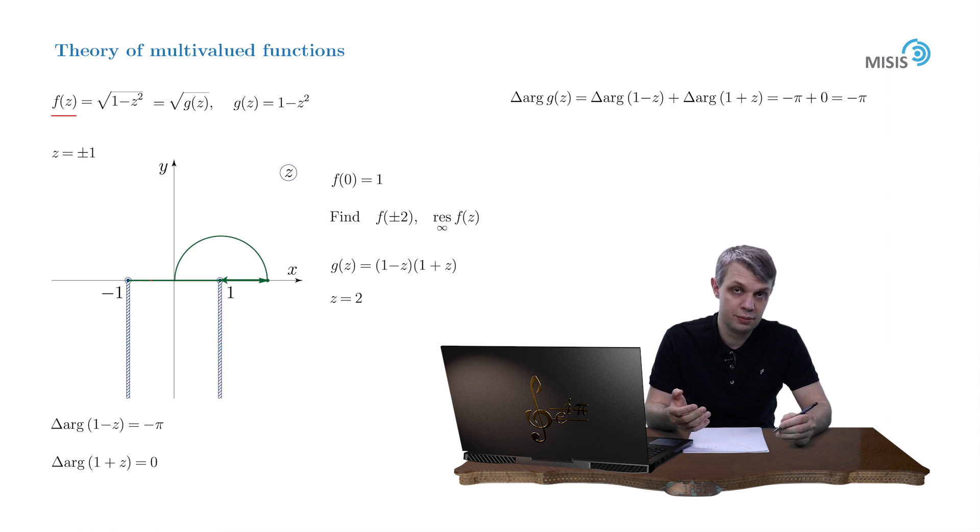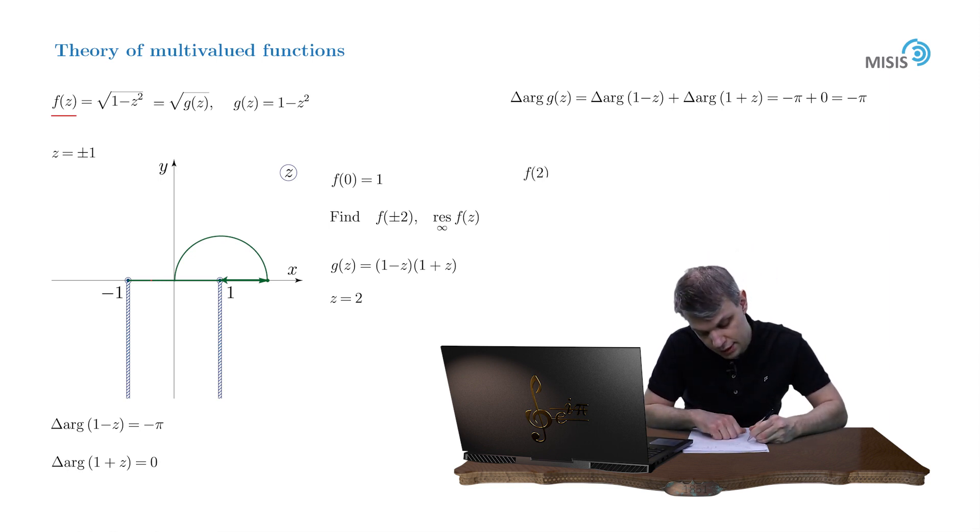Then we simply use the formula for our regular branch. f(2) equals the square root of the modulus of the ratio of g(2) and g(0) times exponential to the power of i by 2 delta argument of g times the value of our regular branch in point 0.